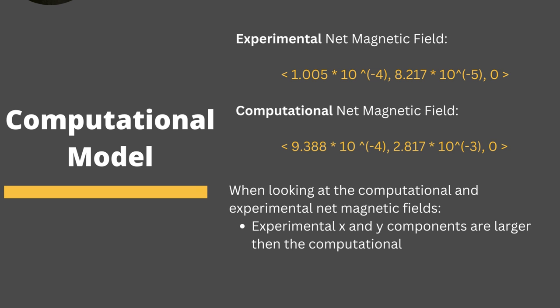We can see that the experimental net magnetic field that we got from our Excel spreadsheets and everything is actually greater than that of the computational net magnetic field in the x and y components for this instance.